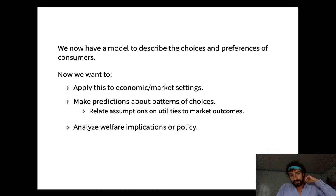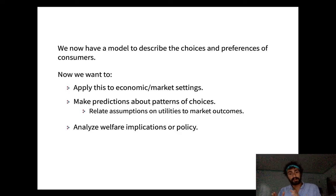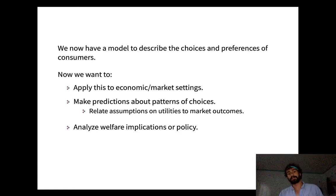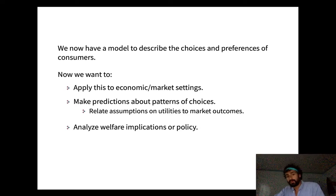The third part of the model is a utility function, which describes how much the consumer likes each bundle. It's a function that takes vectors in R^n and assigns them a number. What matters is whether the number is bigger: if the utility assigned to bundle x is bigger than that assigned to bundle y, the consumer prefers bundle x. So if the utility of bundle x is greater than the utility of bundle y, the consumer would choose x instead of y if both were available.